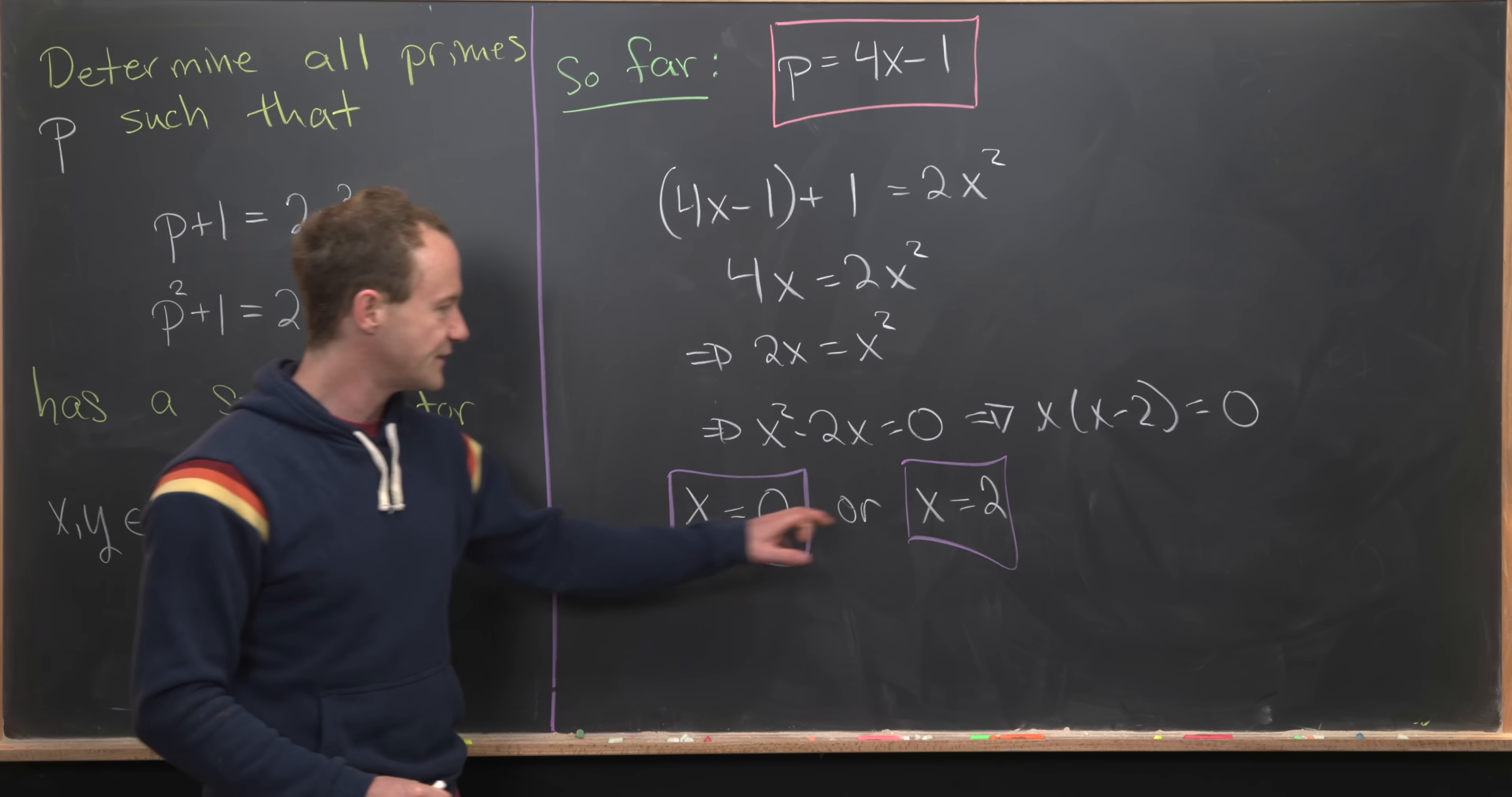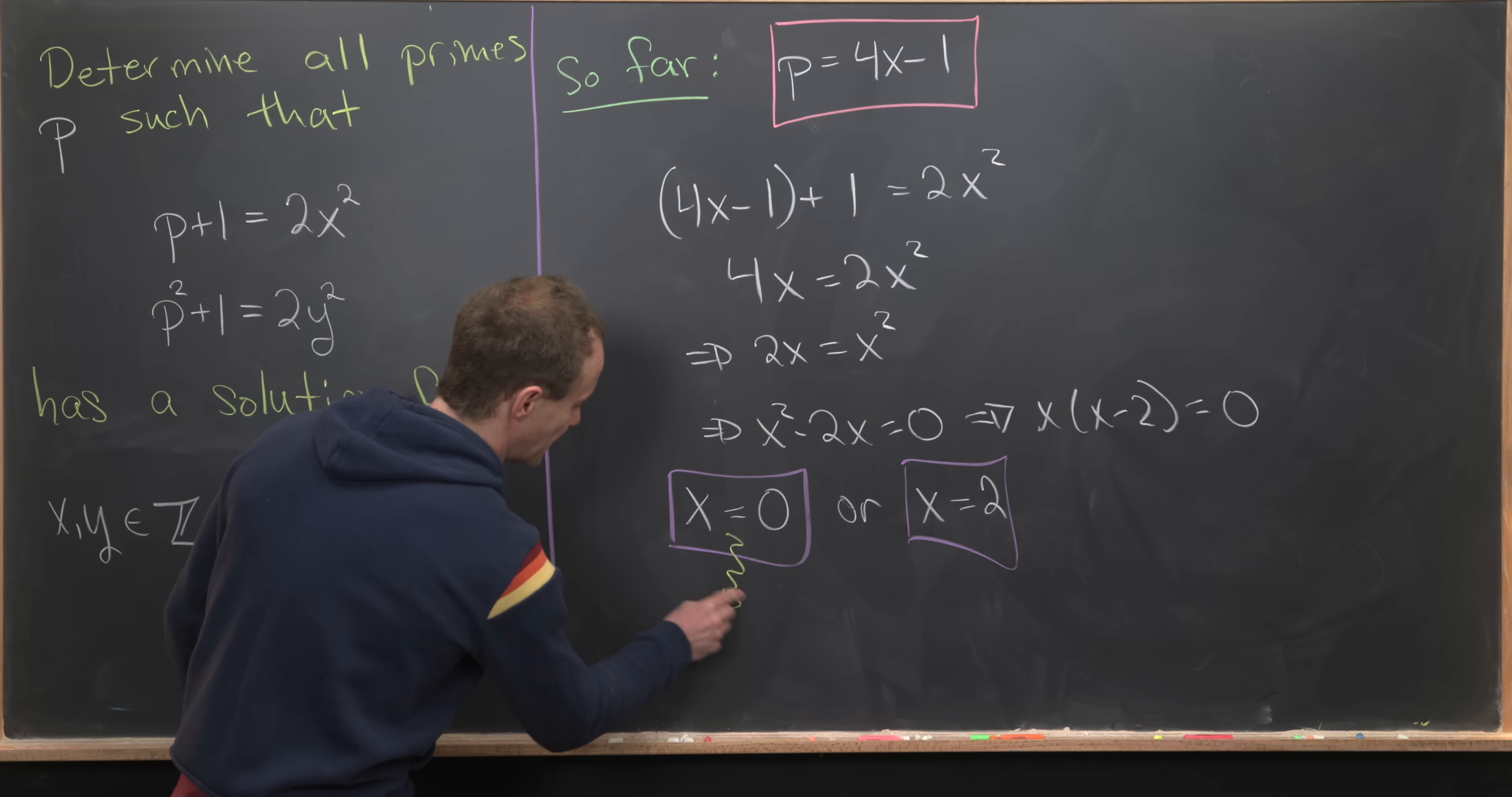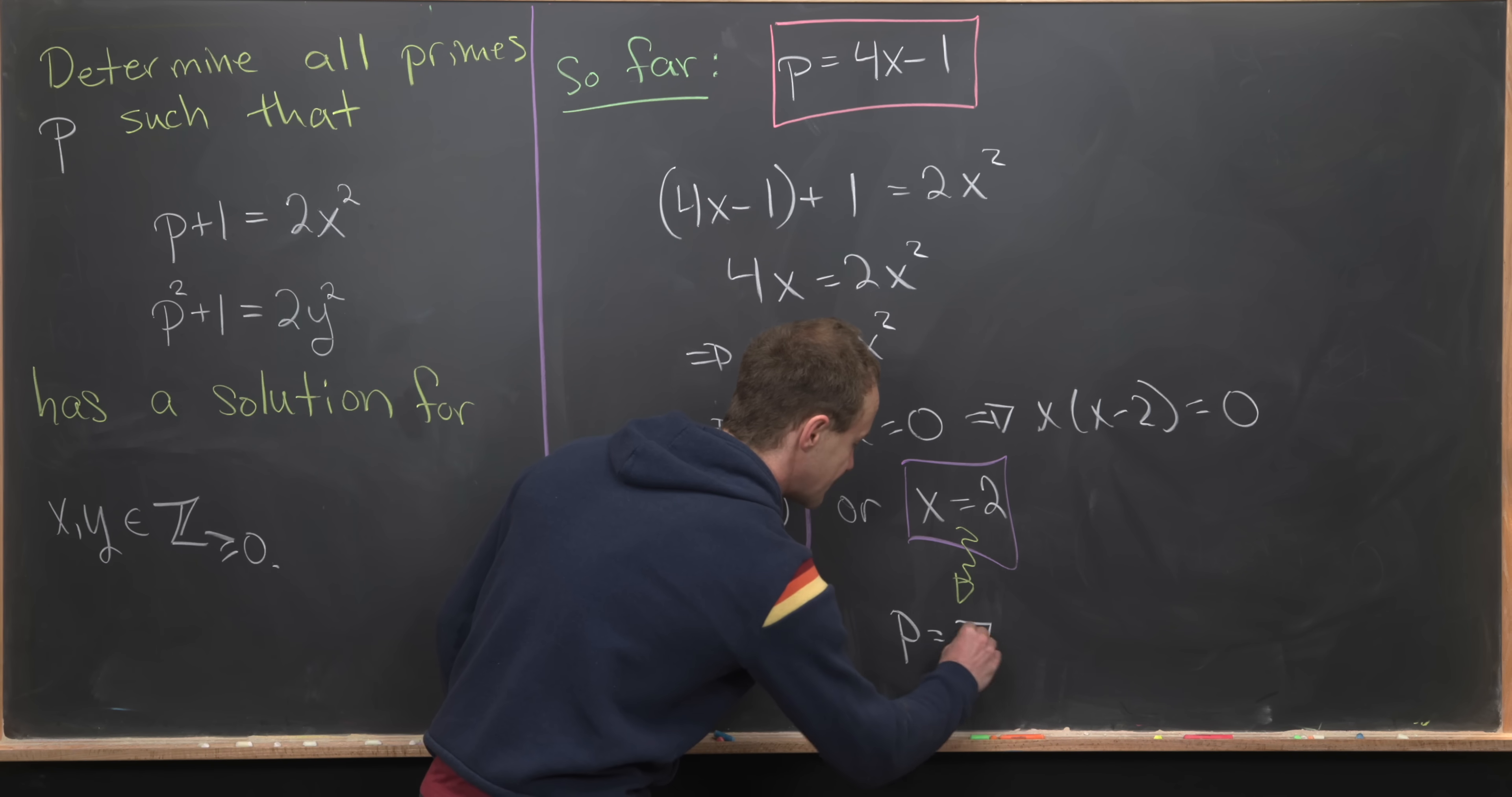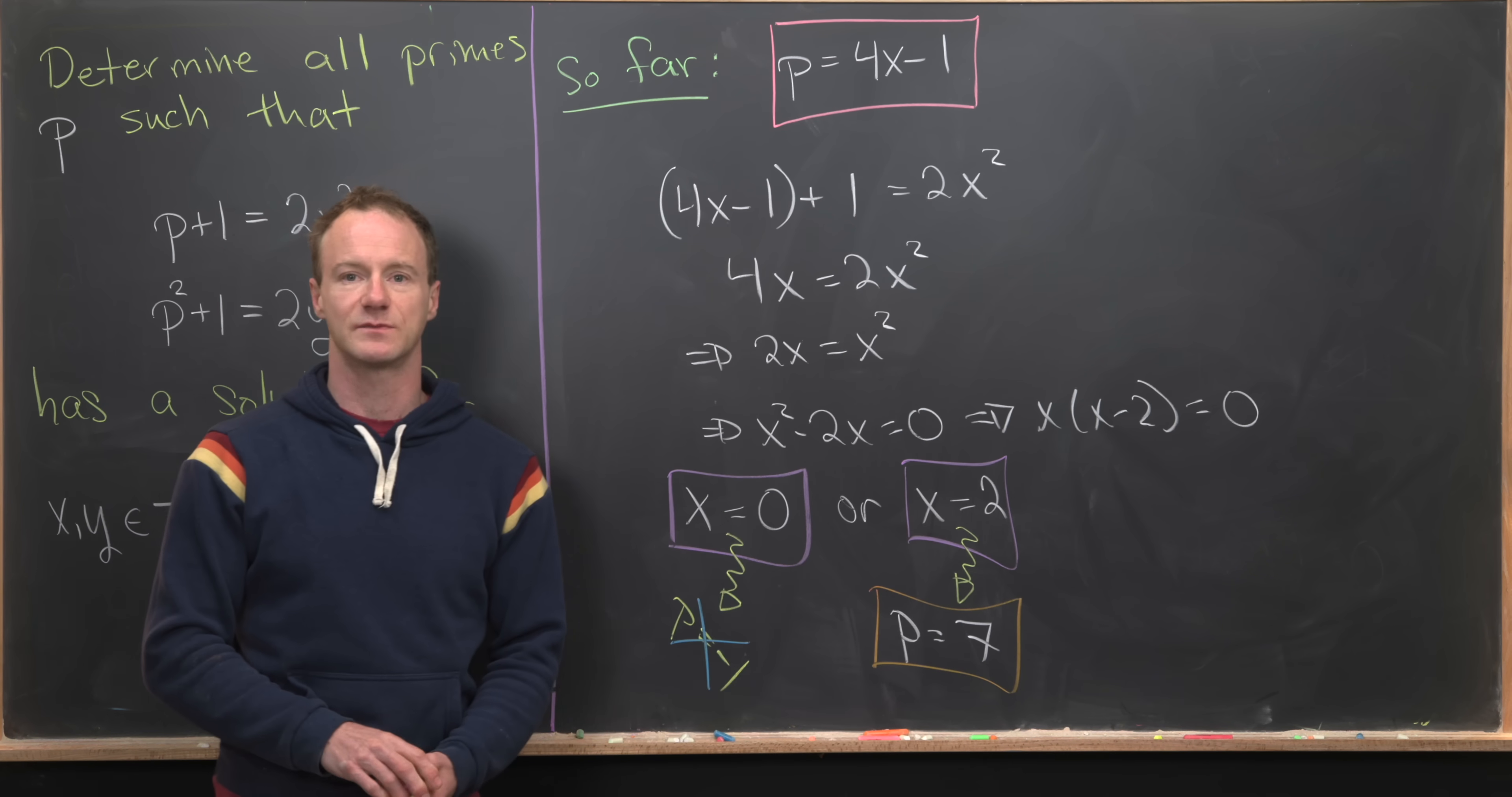Now we'll take each of these possibilities, plug them into our equation for p, and keep whichever gives us a prime. Plugging x=0 gives p equals −1. We cannot keep that because −1 is not prime. But plugging x=2 gives p equals 7, and 7 is prime. So that's our solution. The only prime that makes this setup satisfied is 7.